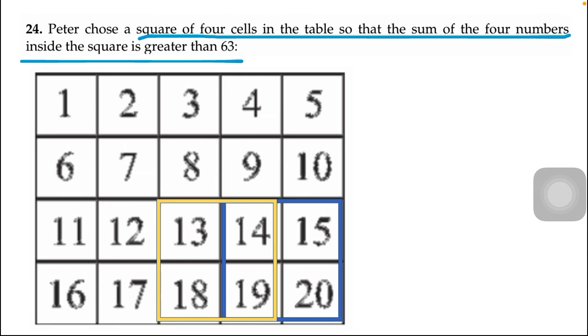Now moving to the left side, I have taken another square. Here the numbers are written 13, 14, 18, 19. After adding these numbers the answer is 64. This one is also correct because the addition of these numbers is greater than 63.